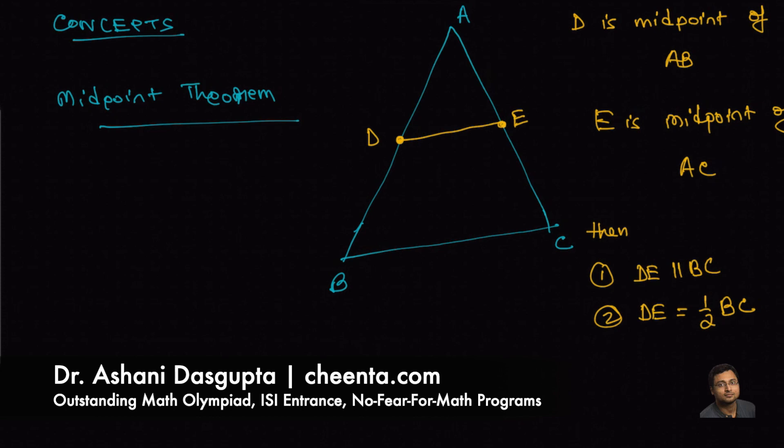The other result that you will need is the Pythagoras theorem. You may know about the Pythagoras theorem already. Its statement is this: if you have side lengths A, B and C of a right-angled triangle, then the square on the legs is equal to the square on the hypotenuse.